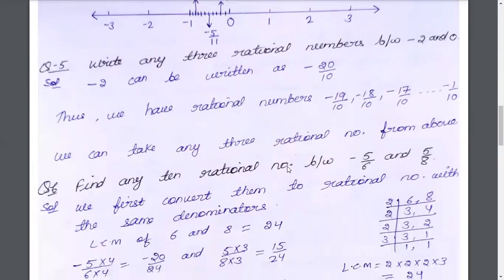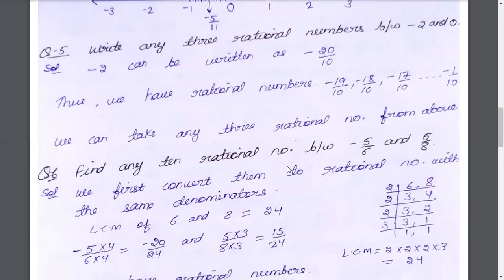Question 5: write any 3 rational numbers between minus 2 and 0. So we can write minus 2 and 0. We convert: minus 2 becomes minus 20 by 10 and 0 remains 0. So between minus 20 by 10 and 0, our three rational numbers can be: minus 19 by 10, minus 18 by 10, minus 17 by 10.